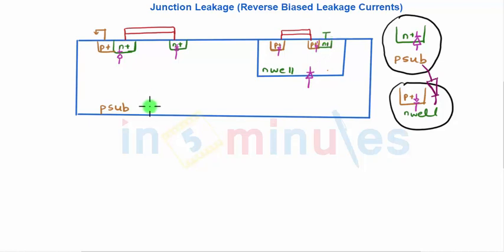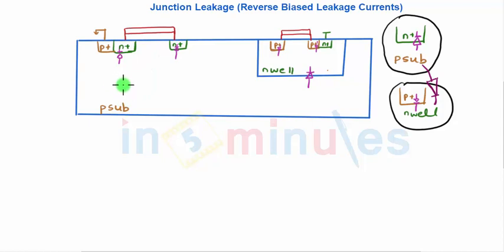This is a P-substrate. On the P-substrate we fabricate an NMOS, so diffusion impurities are N-type for source and drain. The P-substrate for an NMOS — the bulk or body — needs to be connected to ground, which I have shown here.